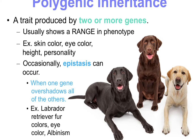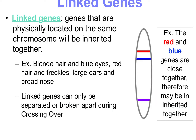Occasionally, epistasis can occur, and that's when one gene overshadows all others. In Labrador retrievers, for example, one color gene overshadows others. It's similar to albinism — it doesn't really matter what other genes you have; if you're coding for albinism, you're going to be albino regardless of what other multiple alleles you carry.